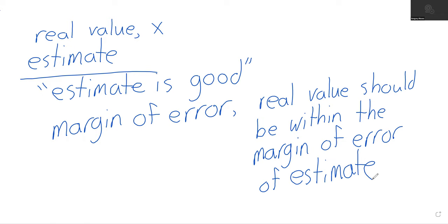An example will clarify things right up though. But if we've got this situation, then as an absolute value inequality, we're saying that x minus the estimate in absolute value is less than the margin of error.